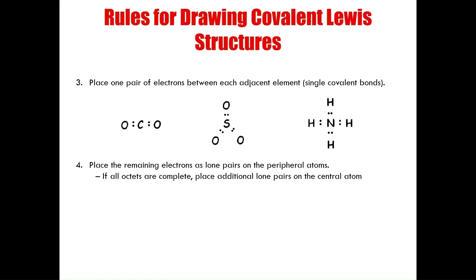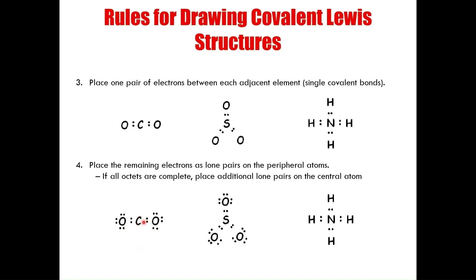The fourth rule: take the remaining electrons and place them around the peripheral atoms as lone pairs. For carbon dioxide, I had 16 total electrons and used four to bind to the central atom, placing the remaining 12 as lone pairs on the peripheral oxygens — confirming the total of 16. For sulfur trioxide, all electrons add up to 24. The ammonium ion uses all eight available electrons.